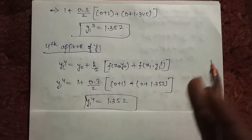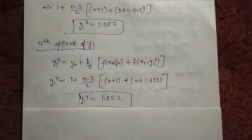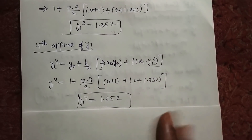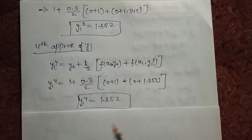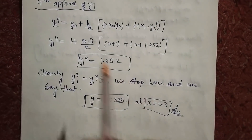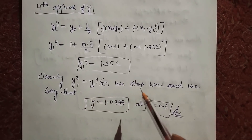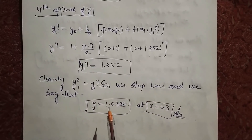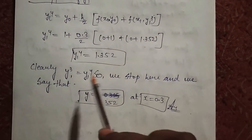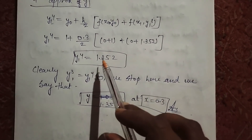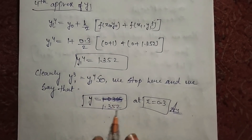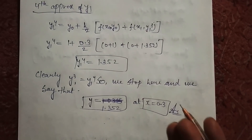You might feel like going on to the next, next, next value — but there is a stopping condition. When two consecutive values become the same, we stop the method. See here: y1 cubed and y1 to the fourth are exactly the same values. So we stop here. When values are equal, it means we have converged. The final answer is: at x = 0.3, y equals that converged value.